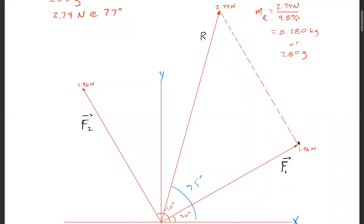So 1.96 Newtons at 30 degrees and 1.96 Newtons at 120 degrees. We can translate this one over to here and use a head-to-tail method to get the resultant.